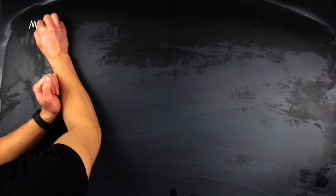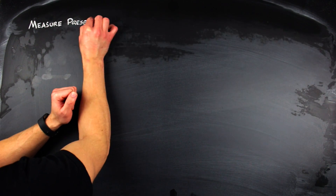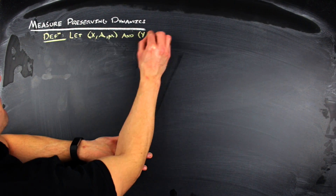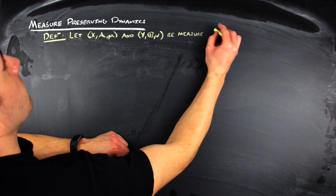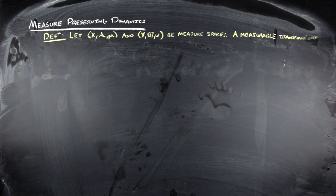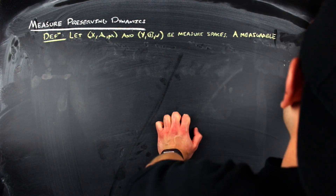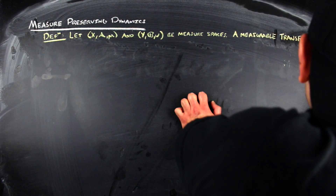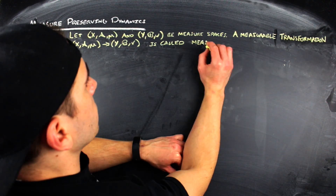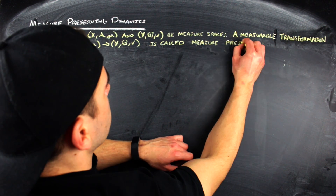Let me tell you what a measure-preserving map is. Let (X, A, μ) and (Y, B, ν) be measure spaces. A measurable transformation T going from (X, A, μ) to (Y, B, ν) is called a measure-preserving transformation if μ composed with the pre-image of T is equal to ν.